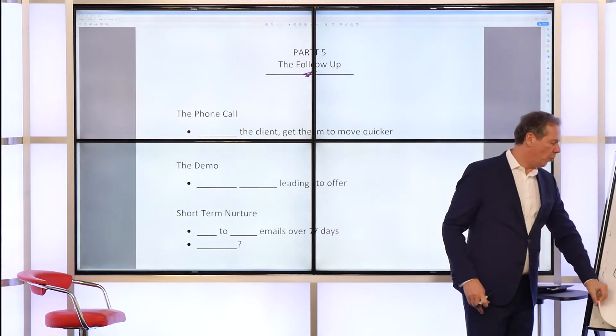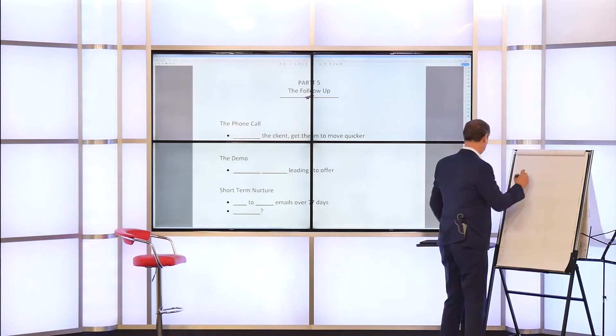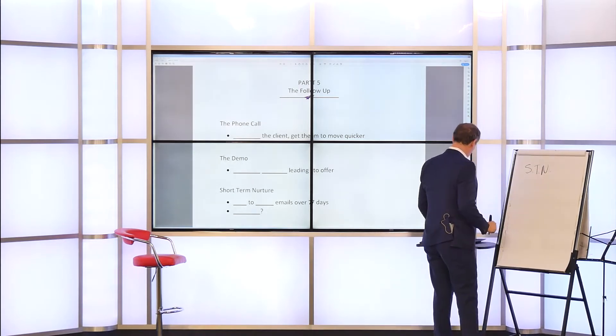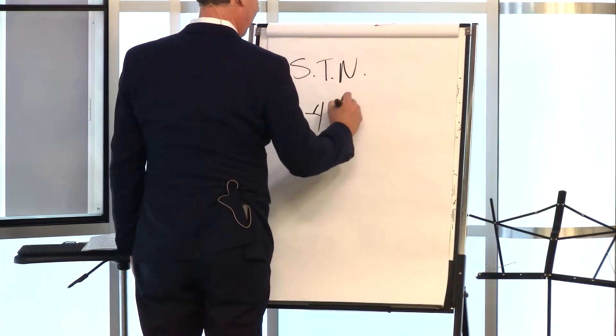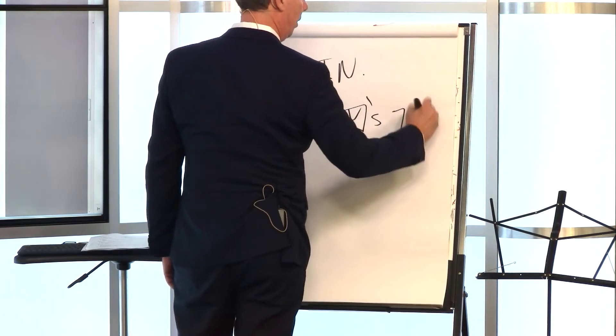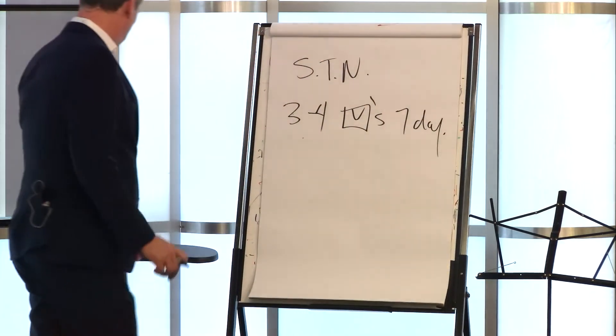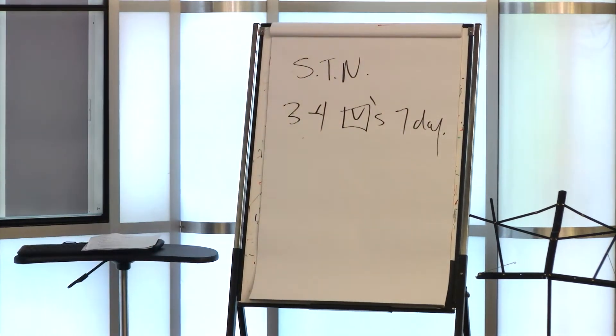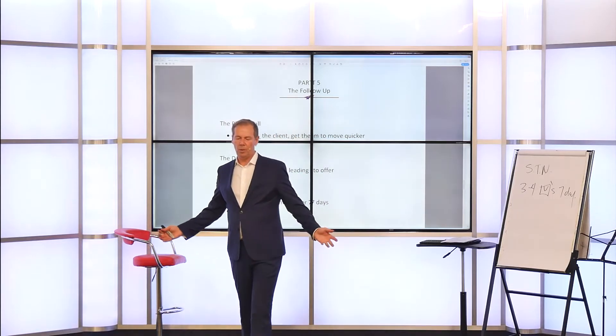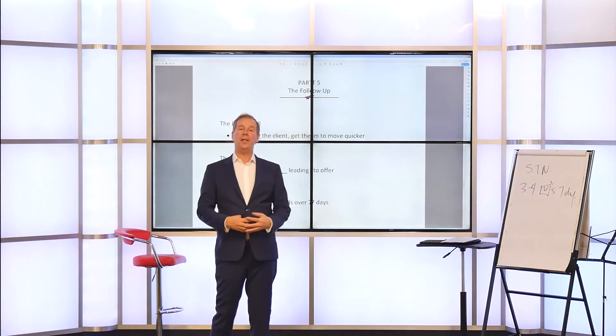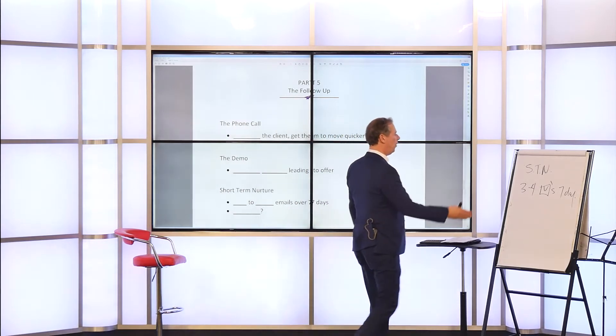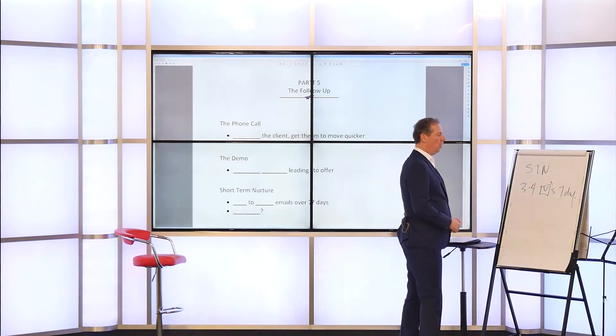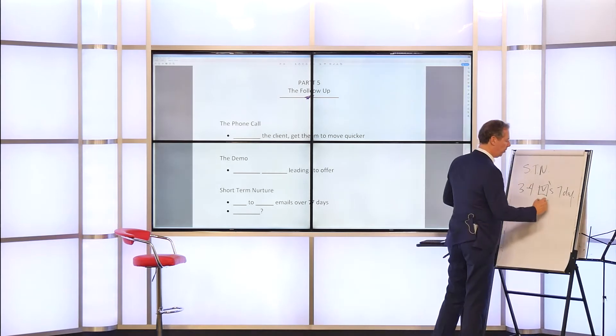The follow-up short-term nurture, or STN for short. Short-term nurture is three to four emails over a seven-day period. Short-term nurture applies to people who have taken the free and now you want to move them towards tripwire. So they're getting three to four emails over a seven-day period to make their first purchase.